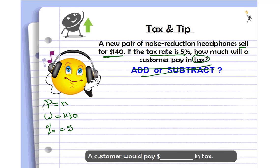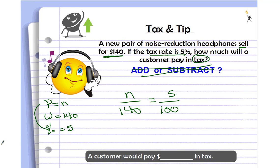We can't add dollars and percent, so we need to find how many dollars five percent equals — that's our part. The part and the percent go together, so let's set up our proportion: part over whole equals percent out of 100. Go ahead and pause the video, solve this, and when you're done come back and check your answer.